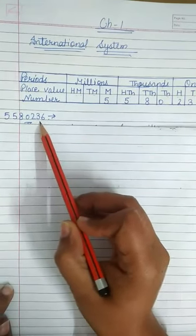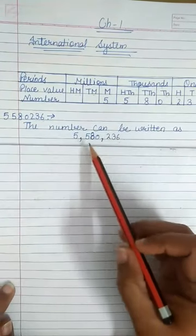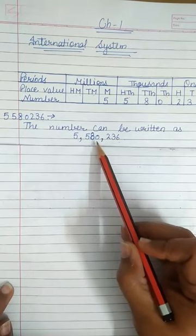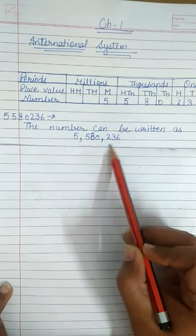5,580,236. How can we write this number? This number can be written as 5,580,236.